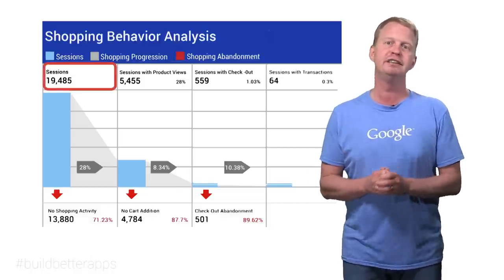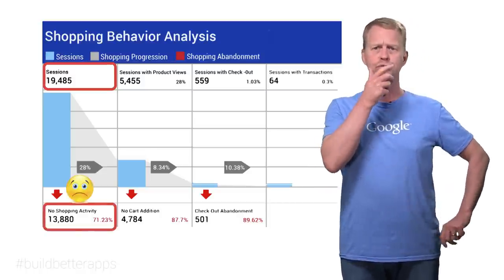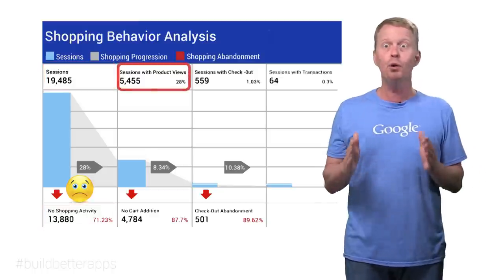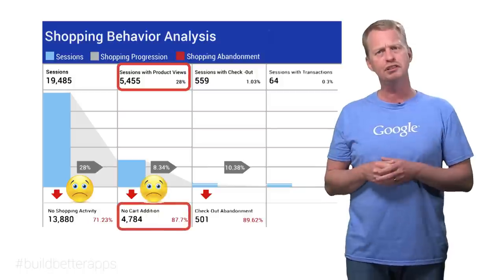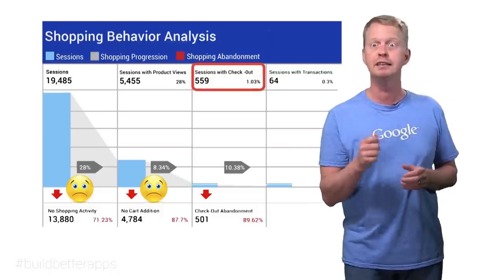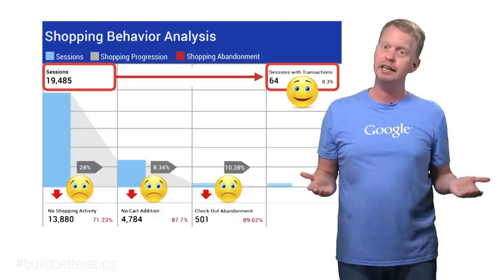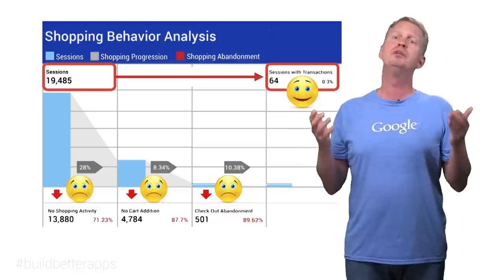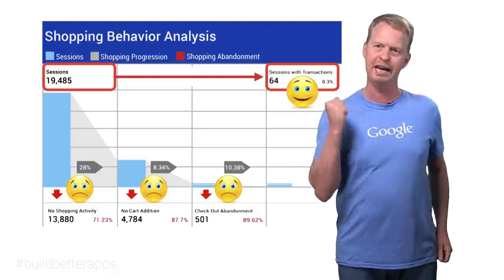Let's look at this example. In the first step, you can see that there were almost 19,500 recorded sessions. But almost 14,000 of those did not result in any shopping activity. There were almost 5,500 product specification views, but 4,700 of those did not result in shopping cart activity. There were 560 checkouts, but 500 of those were cancelled. So out of those 19,500 or so sessions, only 64 became actual shopping transactions.